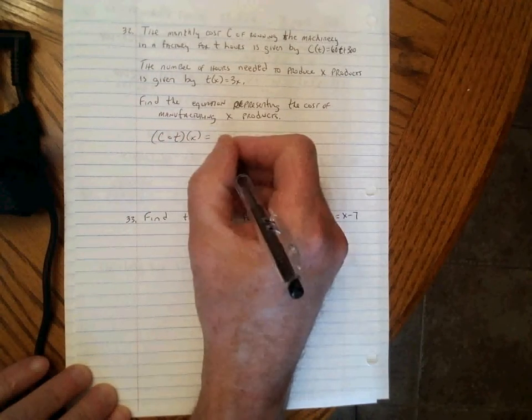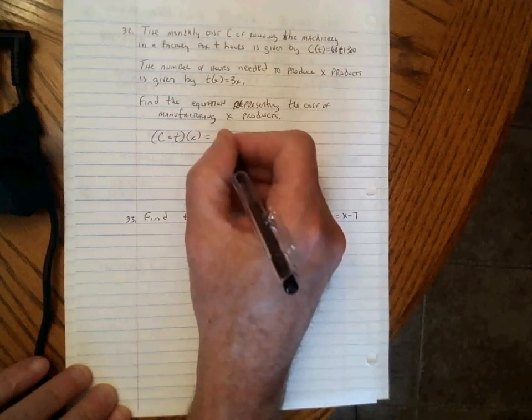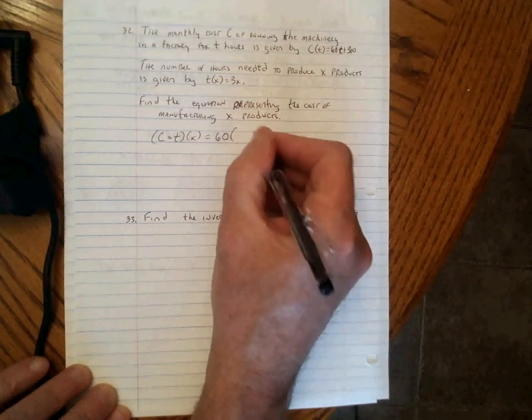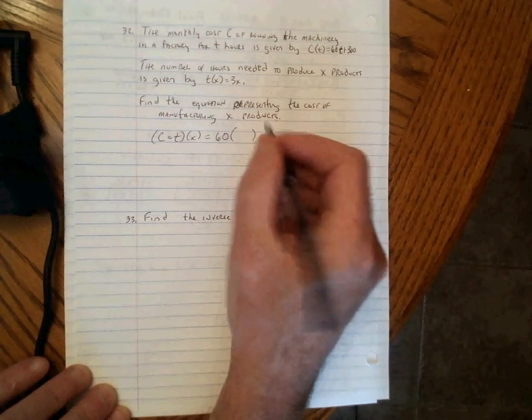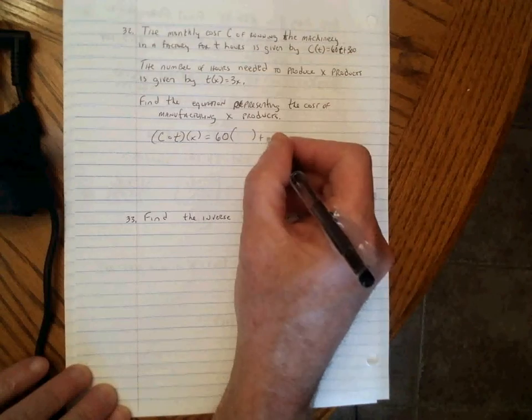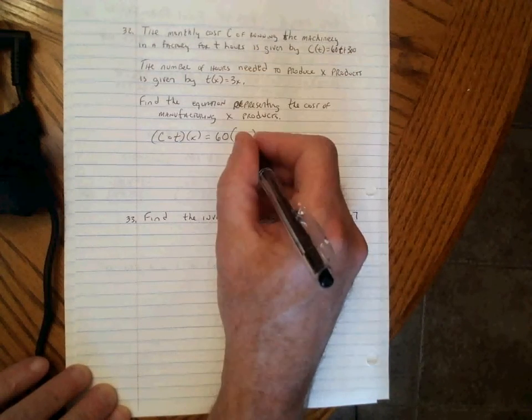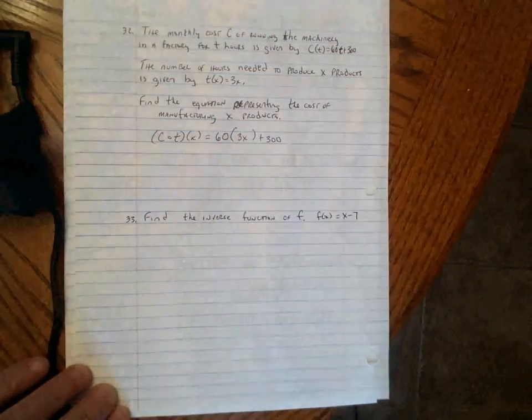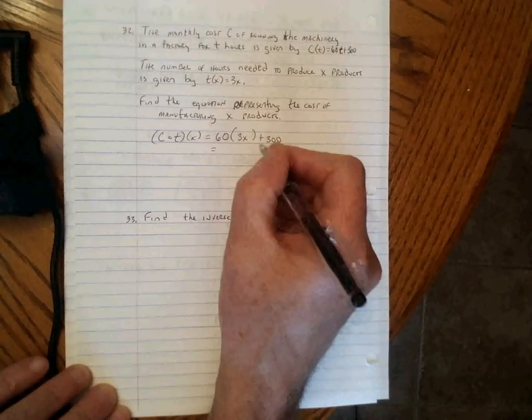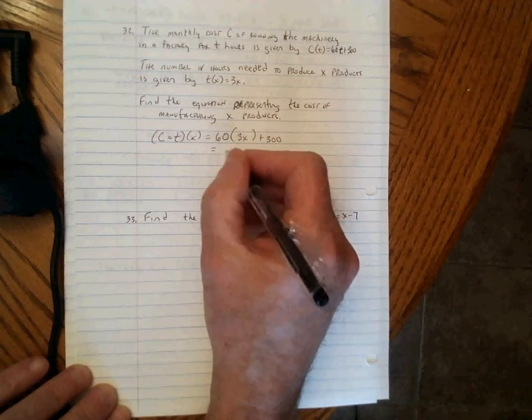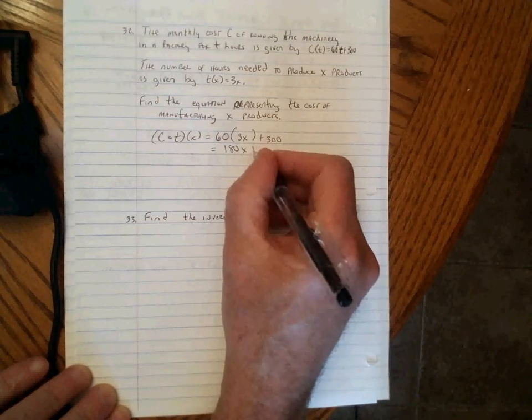So we write down C of T, but everywhere there's a T, we're going to leave a space open to put in T of X. T of X is 3X, so C of T of X, we simplify this. 3 times 60 is 180, that's times X, plus 300.